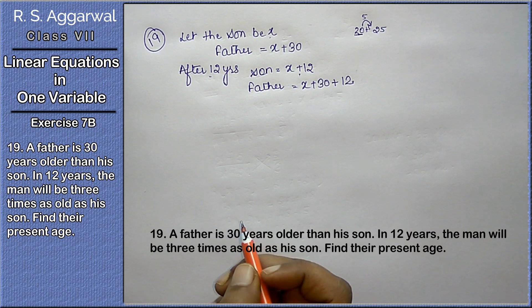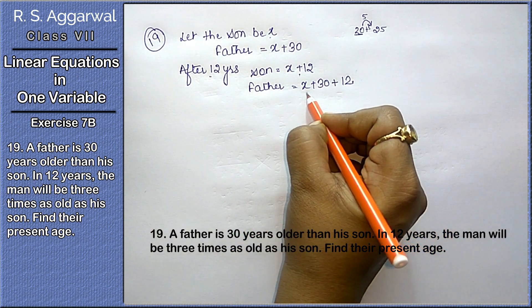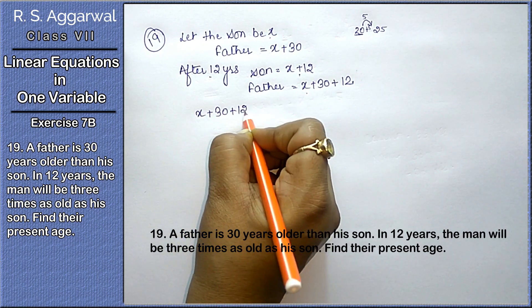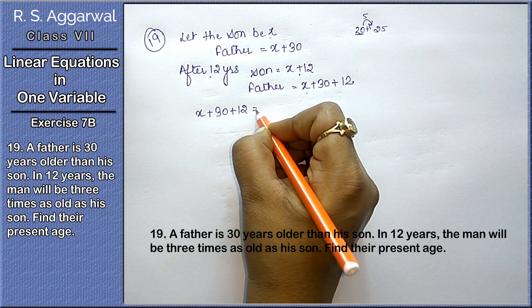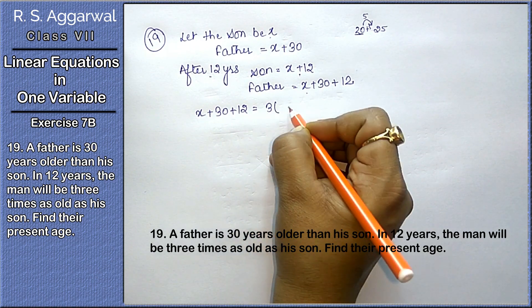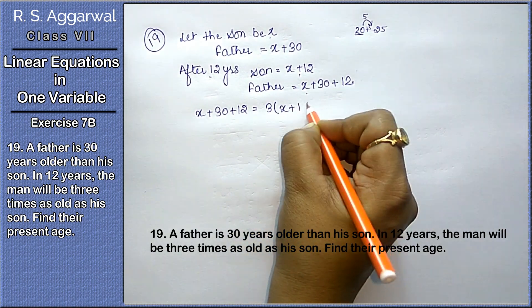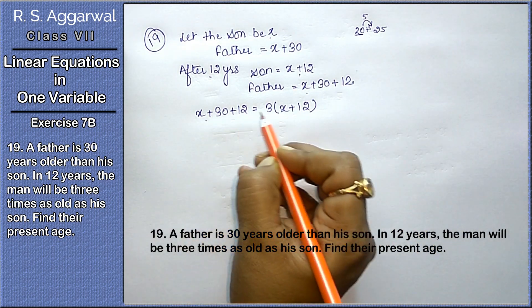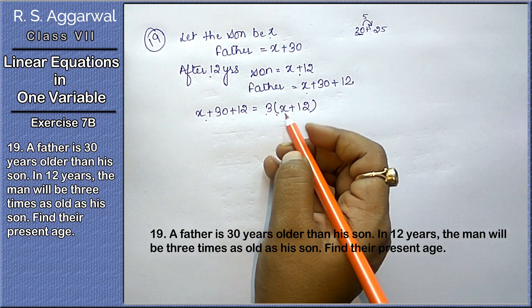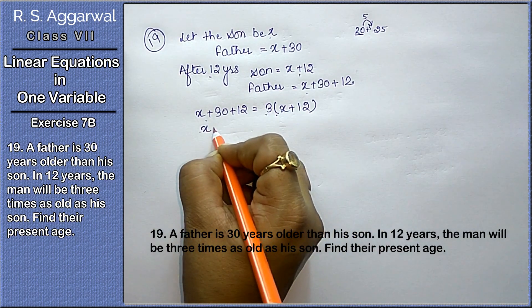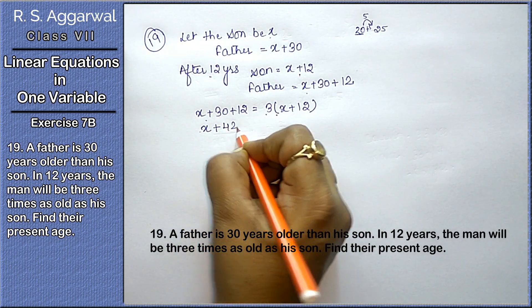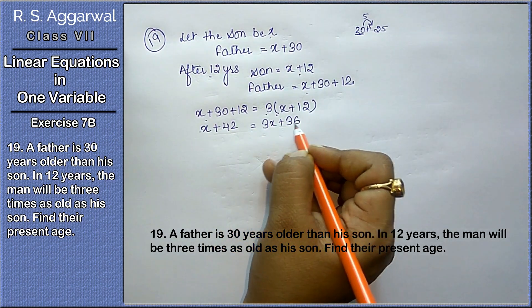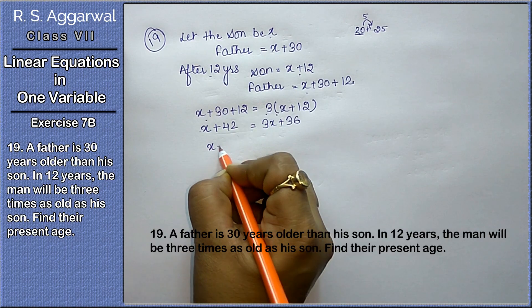...three times as old as his son. So the father's age will be three times the son's age. Therefore: x plus 42 equals 3 times (x plus 12), which gives x plus 42 equals 3x plus 36.